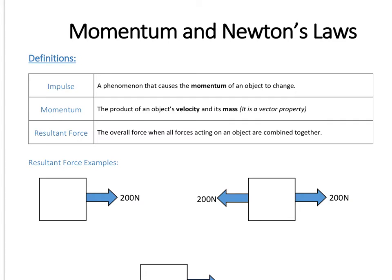So, what is momentum? To calculate an object's momentum, it's the product of its velocity — and that's not the speed, that's the velocity — and its mass. Because we use the velocity, momentum is a vector property, so it has magnitude and direction.